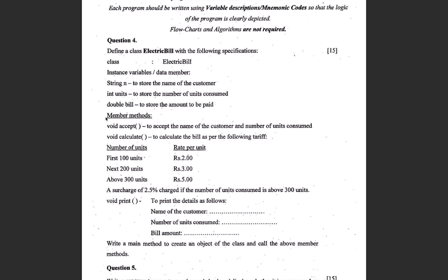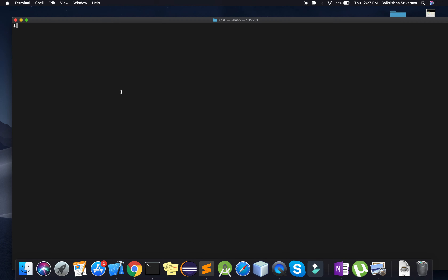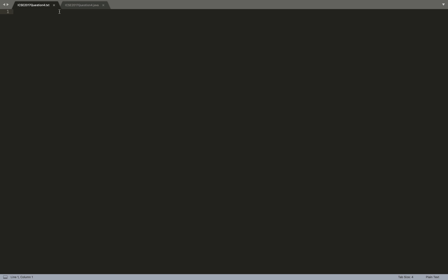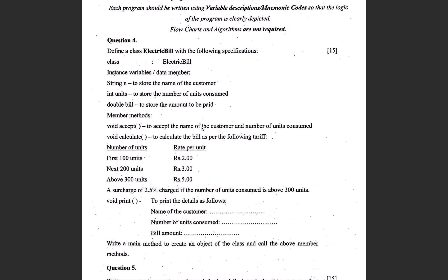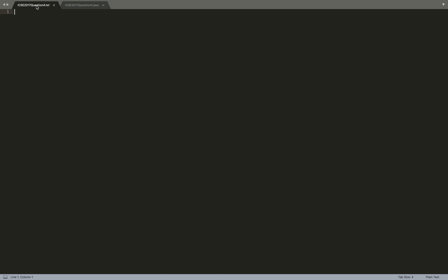You can see this void accept does not take any parameters. So I am going to assume that I have to open a Scanner object to read input from the user inside accept — reading the name and the number of units — and then close that object. Because accept is not taking any parameters, that is what I am assuming. I am going to write this solution on a text file first, then copy it to a Java file and test it.